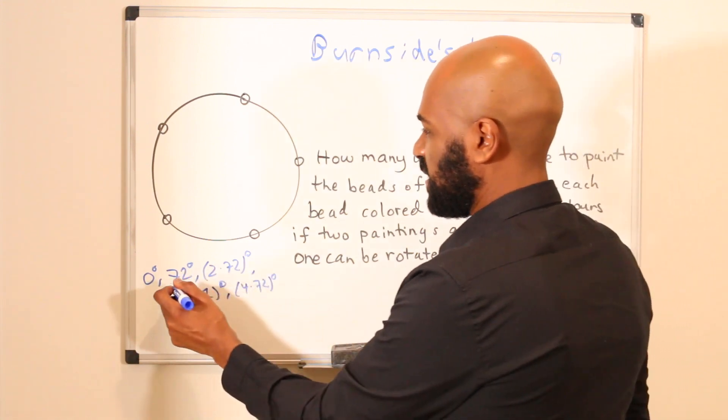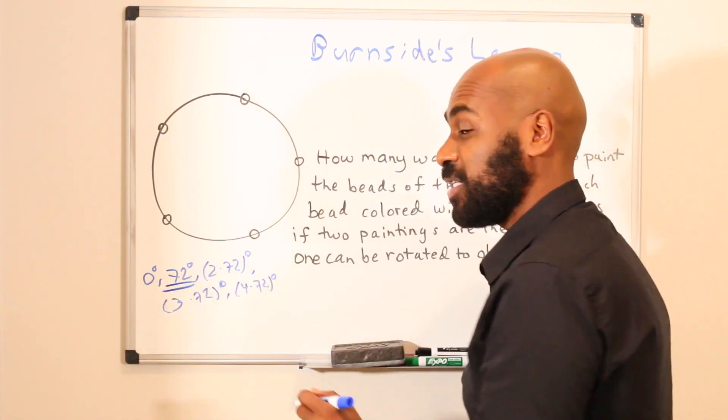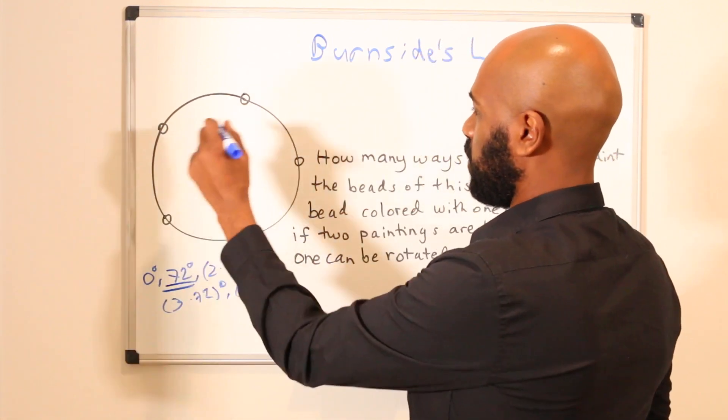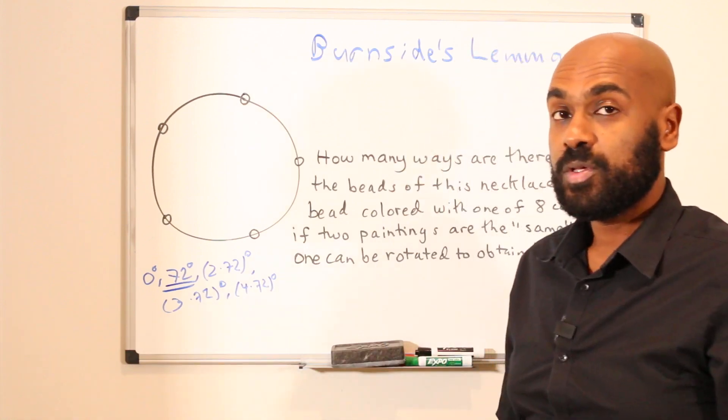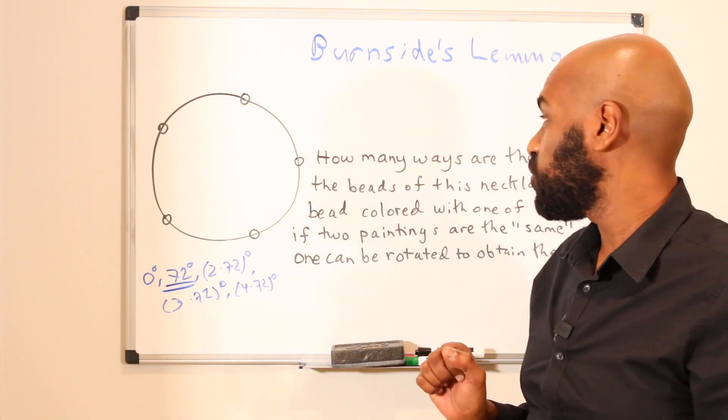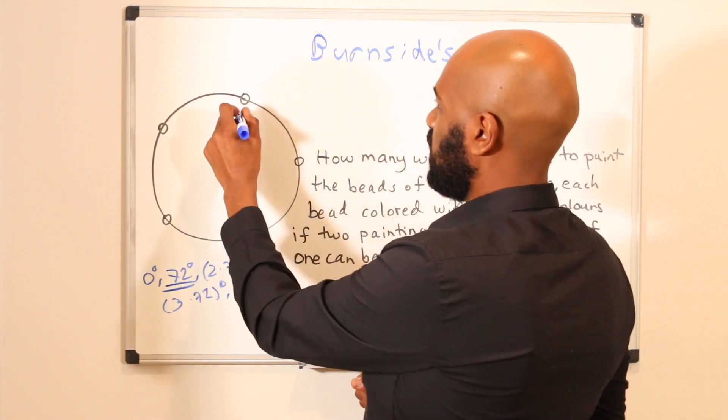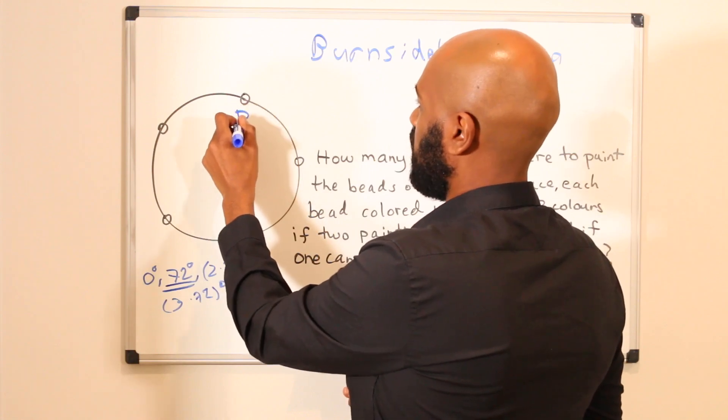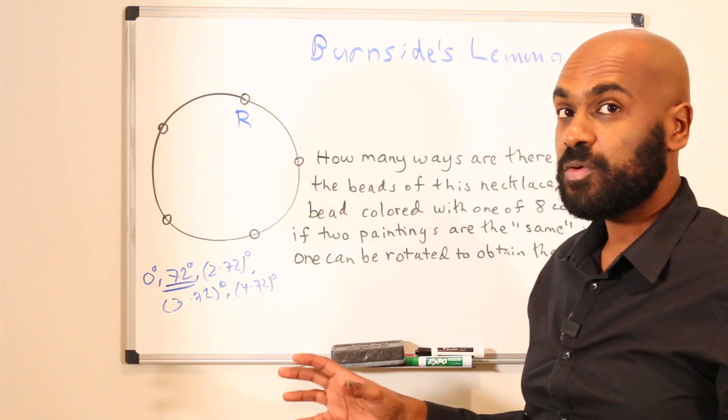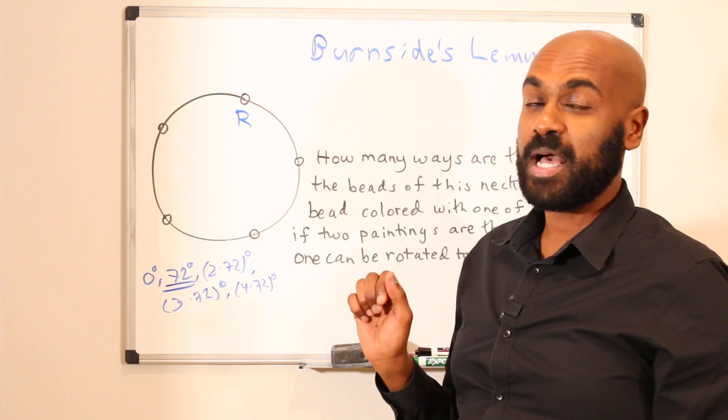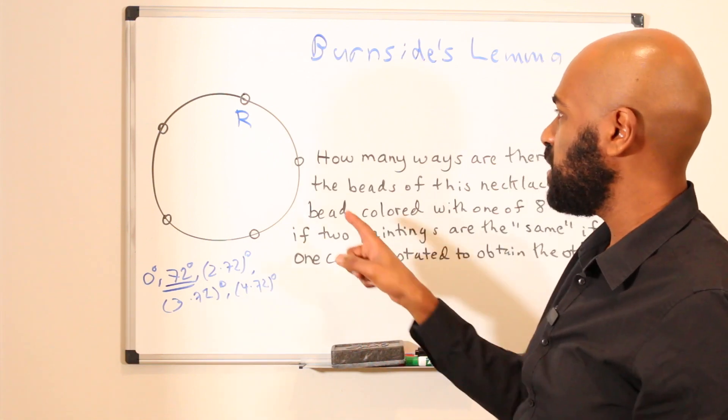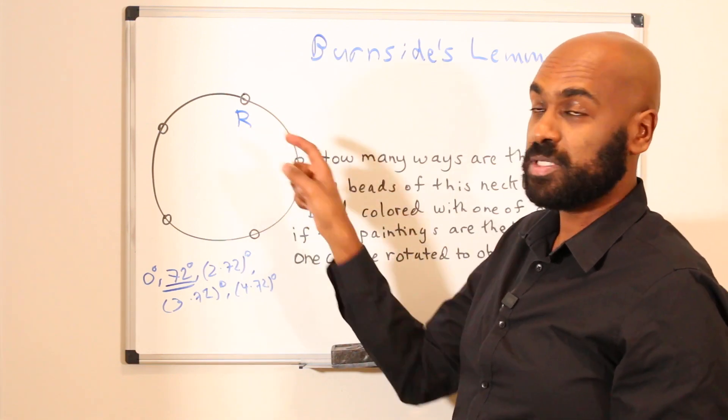Let's take the 72 degree rotation as an example. Say you had a coloring and it was fixed under a 72 degree rotation. Let's say, for example, that this bead was colored red. Now since the coloring does not change when you rotate by 72 degrees clockwise, it means that this bead has to have the same color as this bead.